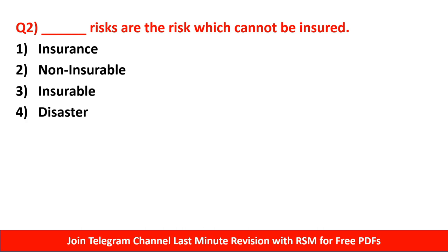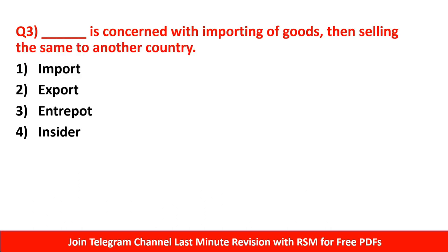Question number 2 options: number 1 - insurance, number 2 - non-insurable, number 3 - insurable, number 4 - disaster. The right answer is number 4 - not insurable.